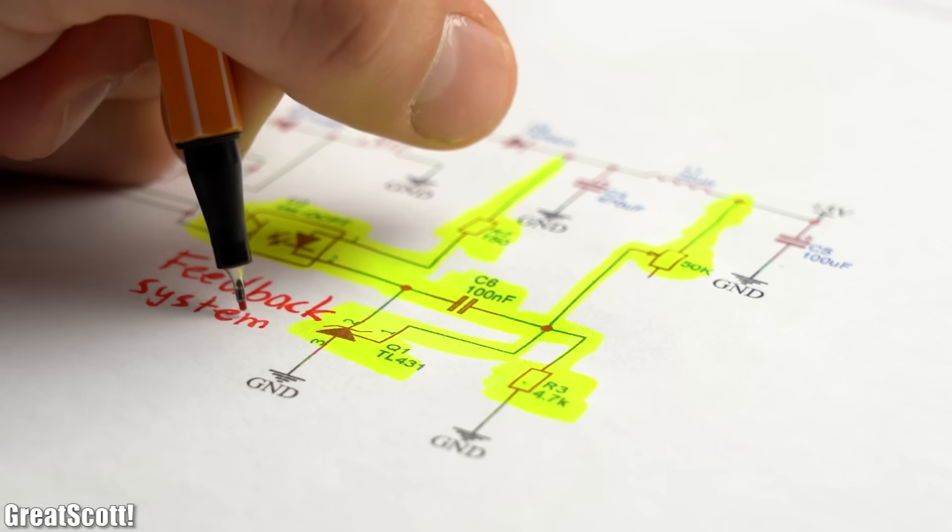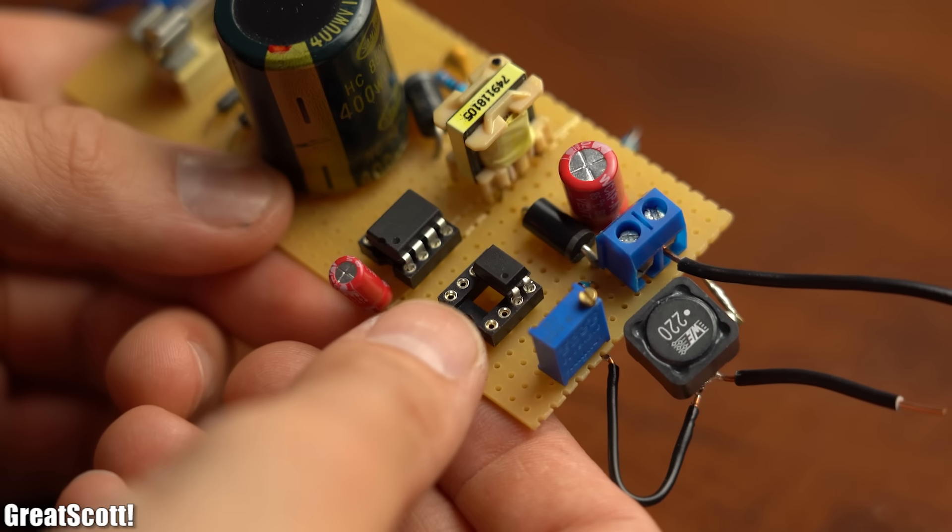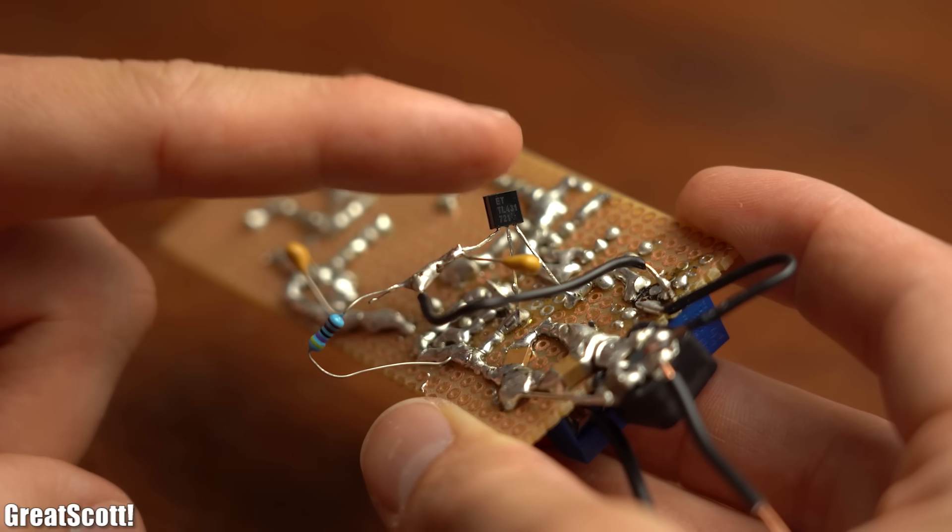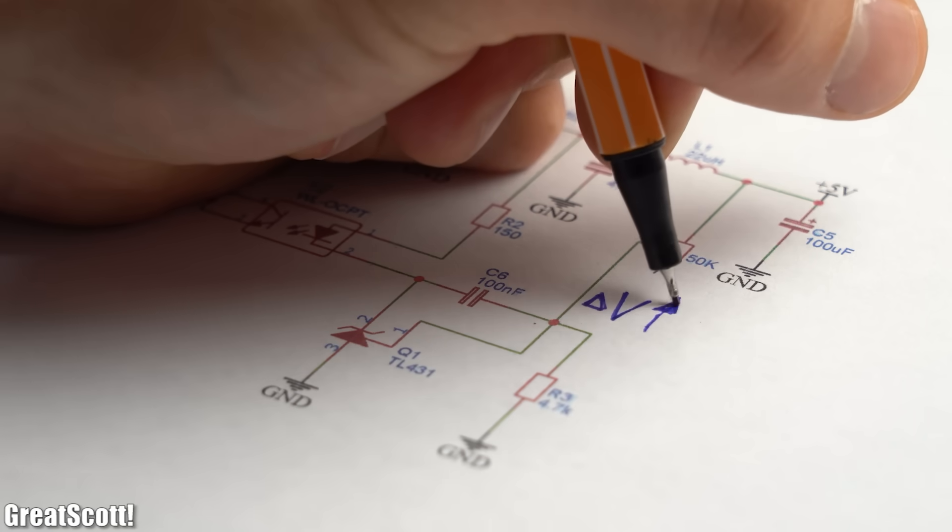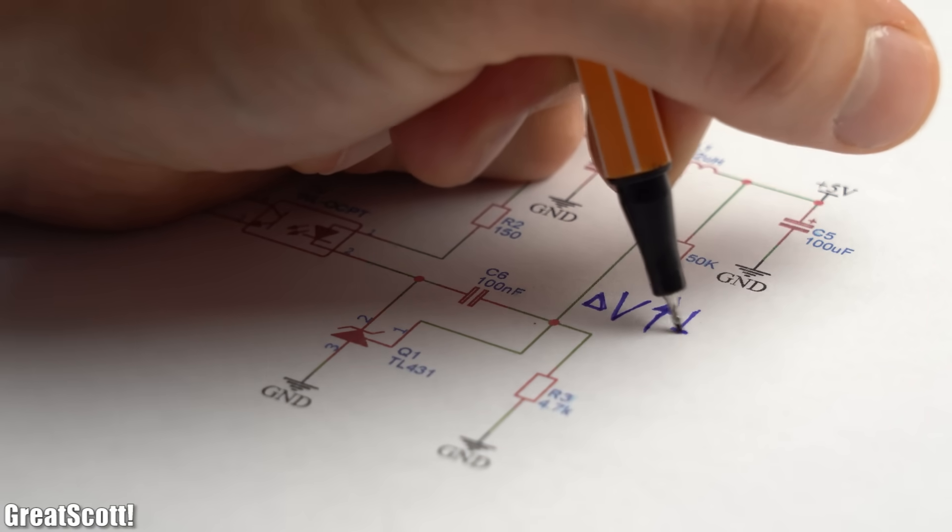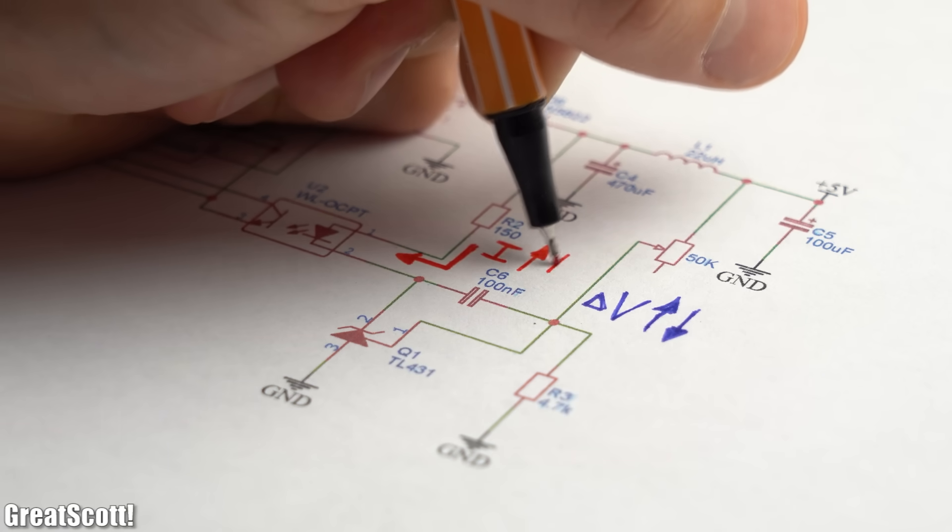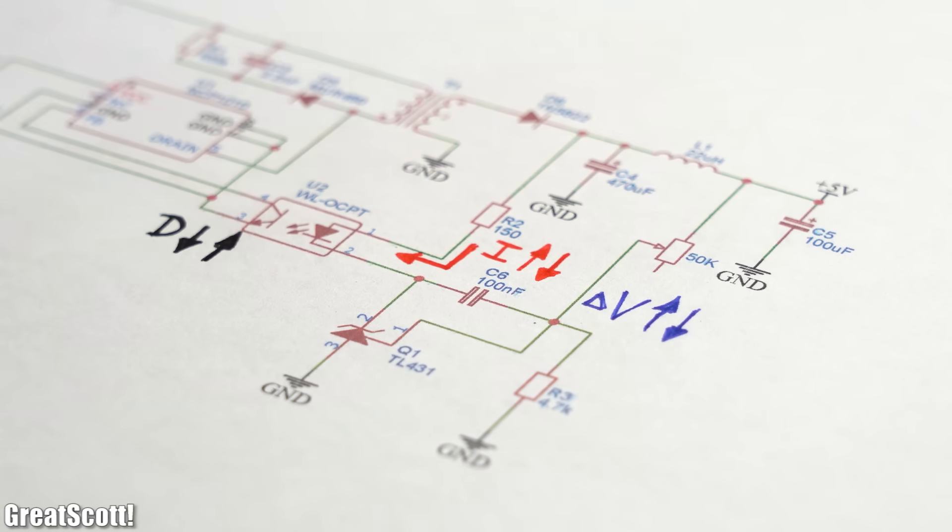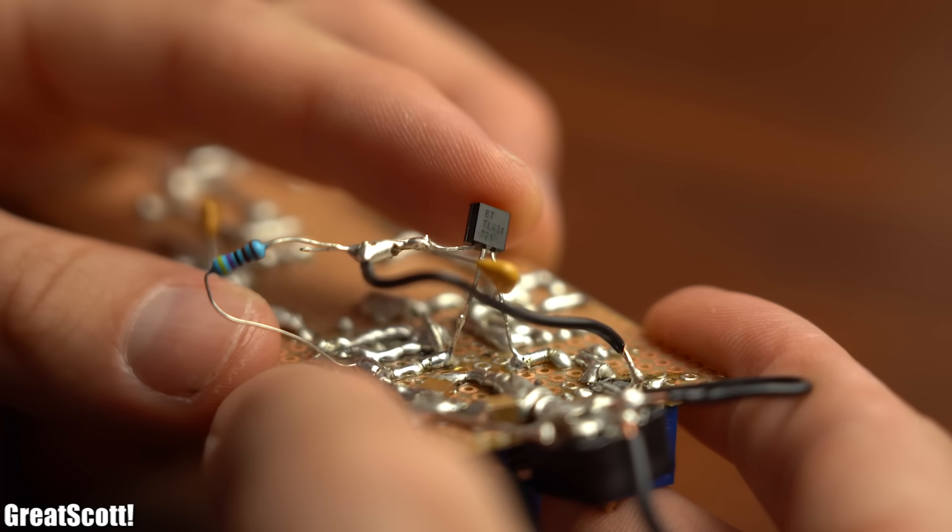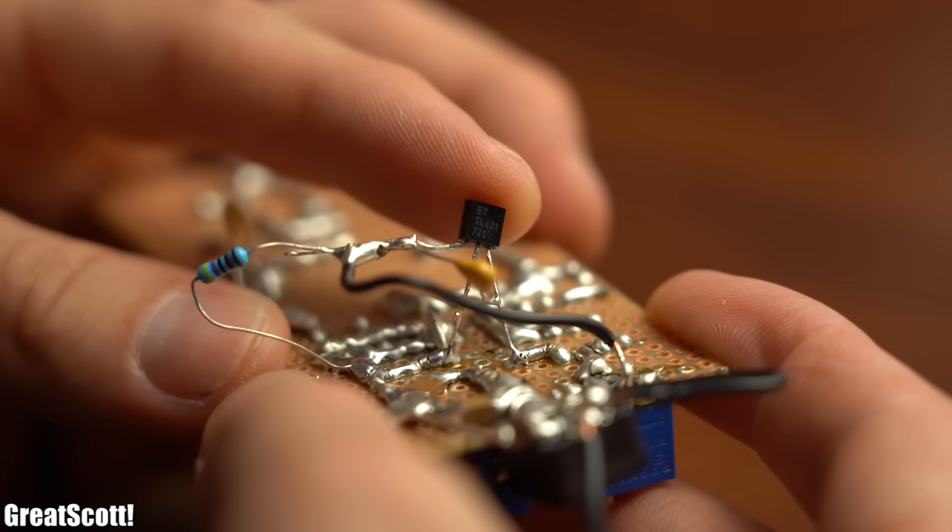And the other big difference is the feedback system, which consists of an optocoupler and a TL431 programmable reference voltage. Simply put, this TL431 quickly reacts to small output voltage changes and thus alters the operating bias point of the optocoupler in order to fine-adjust the duty cycle. But since there is so much to talk about this adjustable voltage reference, there will be an extra video about it.